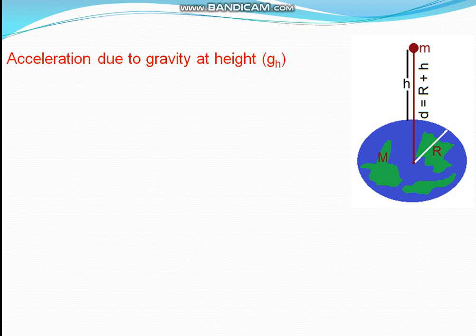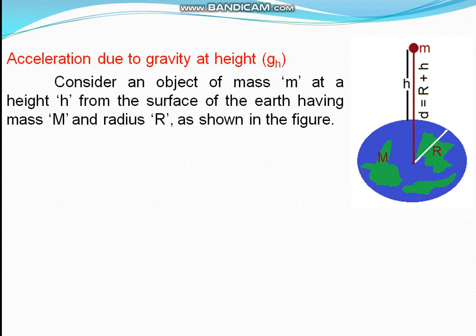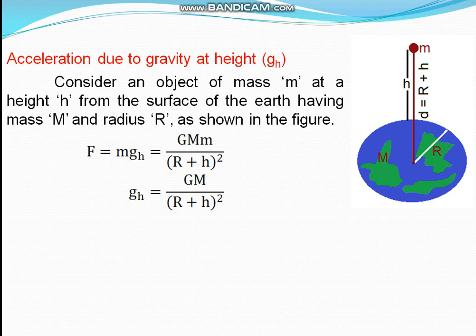Since there are two objects, we use the formula F equals G·M₁ by d squared. Replacing the values, we get G·Mm by (R plus h) whole square. Here, small m cancels each other, so g-h equals G·M by (R plus h) whole square. This is the derivation and formula used to calculate the acceleration due to gravity at height h.